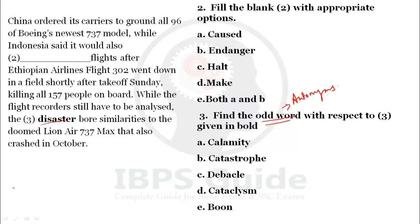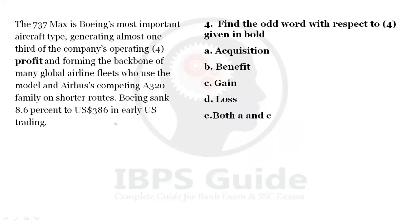The next part of the comprehension reads: 'The 737 MAX is Boeing's most important aircraft type, generating almost one-third of the company's operating profit and forming the backbone of many global airline fleets who use the model and Airbus's competing A320 family on shorter routes. Boeing sank 8.6% to US$386 in early US trading.' Question 4 asks for the odd word — i.e., the antonym — of the highlighted word 'profit'.